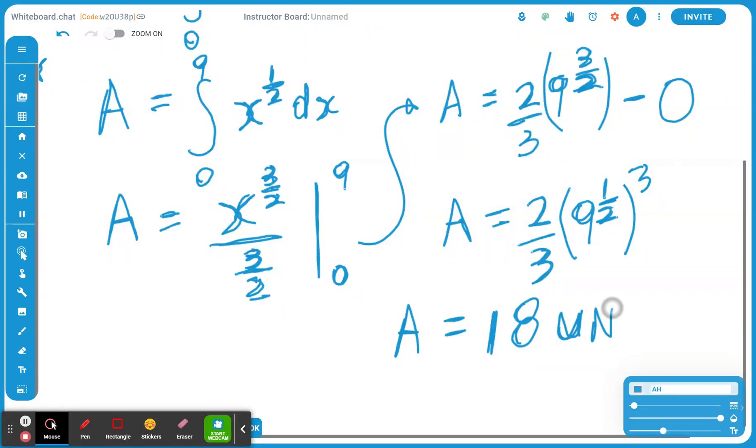Don't forget, we're talking about the area under a curve. So really, the metric is going to be units square. So again, the final area is going to be 18 units square. I hope this makes sense.